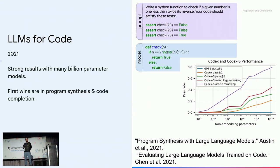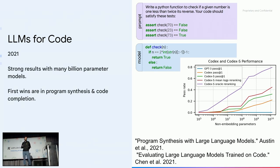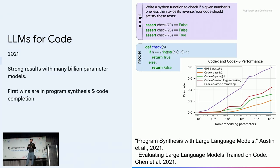To get to the entry point of large language models for code, there were a couple of papers — including the Codex paper and one from Google — using large language models for coding use cases. These were the first strong results from many-billion-parameter models: scaling up Transformer models on a broad range of data, training on both code and natural language together, and looking at what capabilities emerged. The earliest wins were on simple natural language descriptions plus input-output examples to implementations — a program synthesis style problem — and also in code completion use cases.